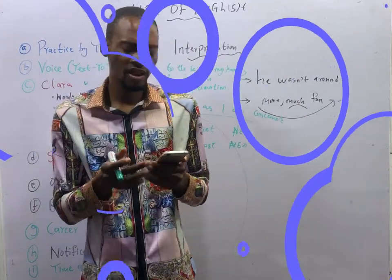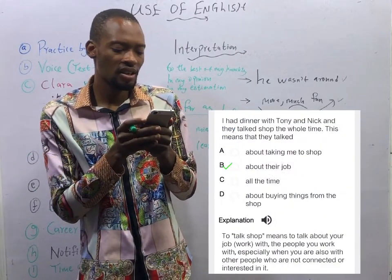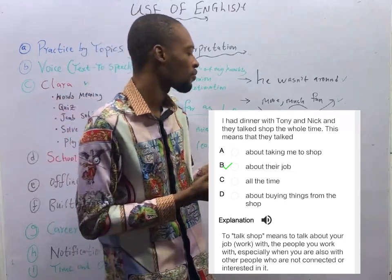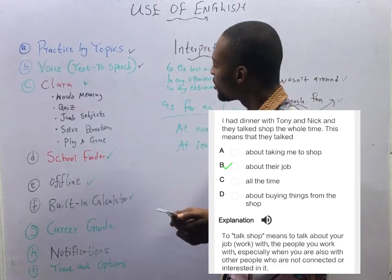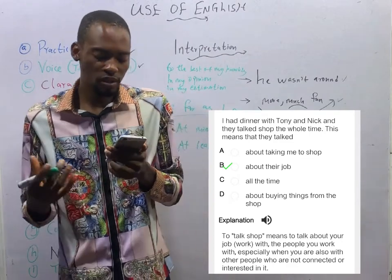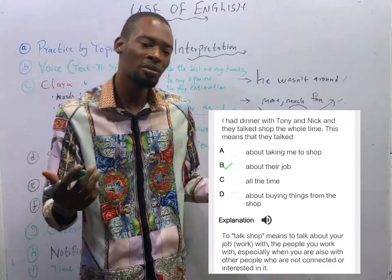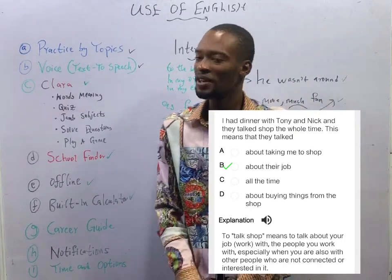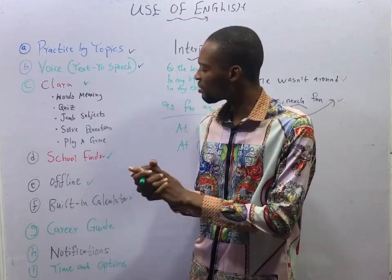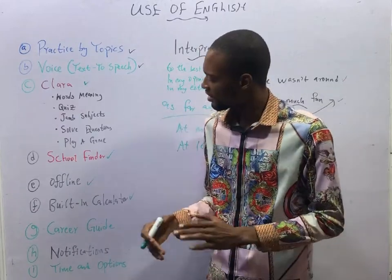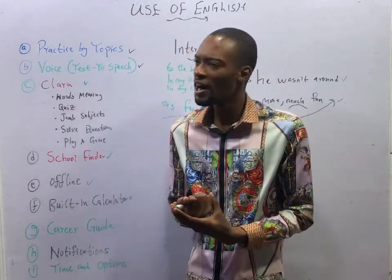The last question for today: 'I had dinner with Tony and Nick, and they talked shop the whole time.' To talk shop means to talk about your job, to discuss your work, especially with your colleagues or those who know about the field. So during the dinner, they talked about their job. This brings us to the end of Episode 9. For your assignment, get your Platinum Jam app and go through all these features — try them out. If you have any problem, chat me up or comment and I will guide you. See you in Episode 10!